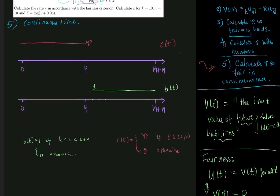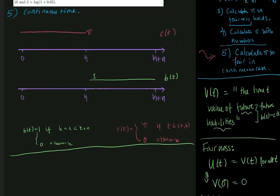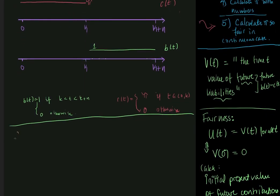So what we want to do now is calculate pi according to the fairness criterion. So calculate pi. And as before, we'll recall that pi is fair or the payment stream is fair. But if pi is fair, we have to find the number such that pi is fair. So pi is fair when v of 0 minus is equal to 0.